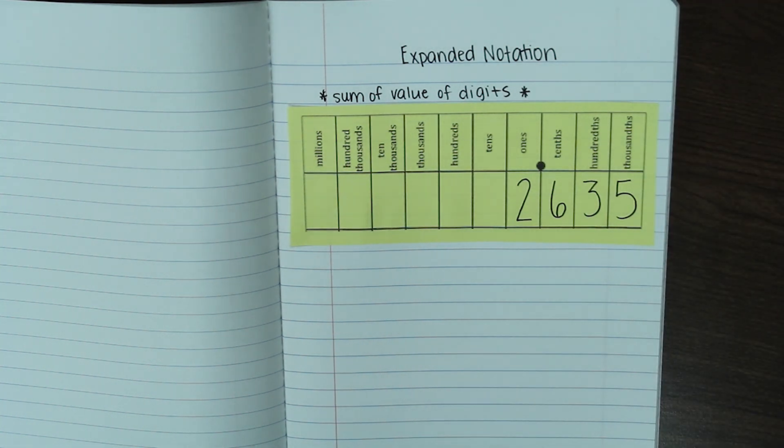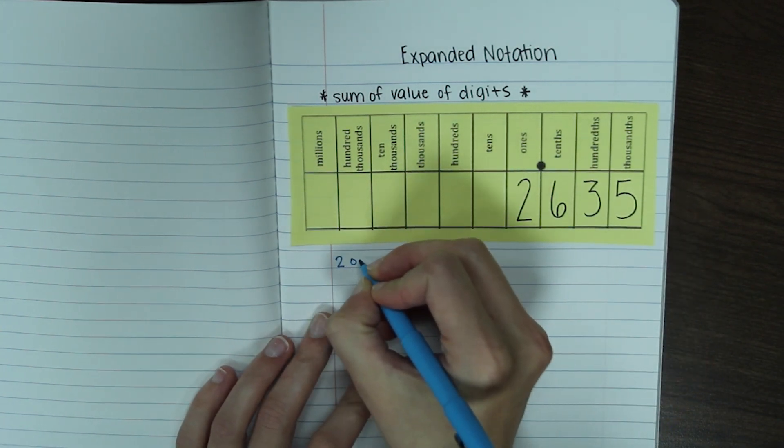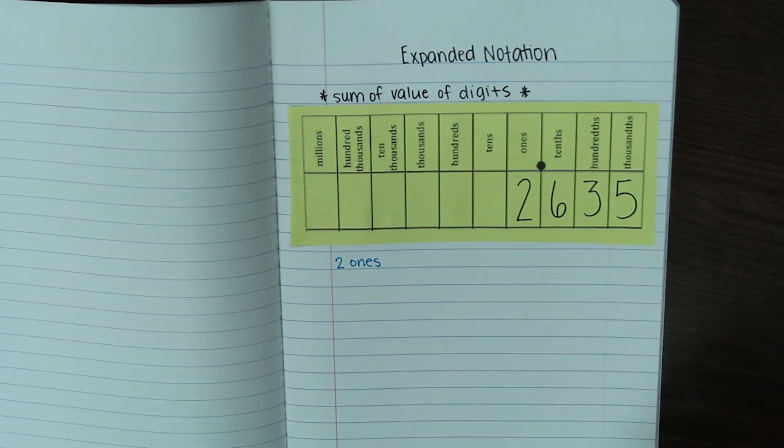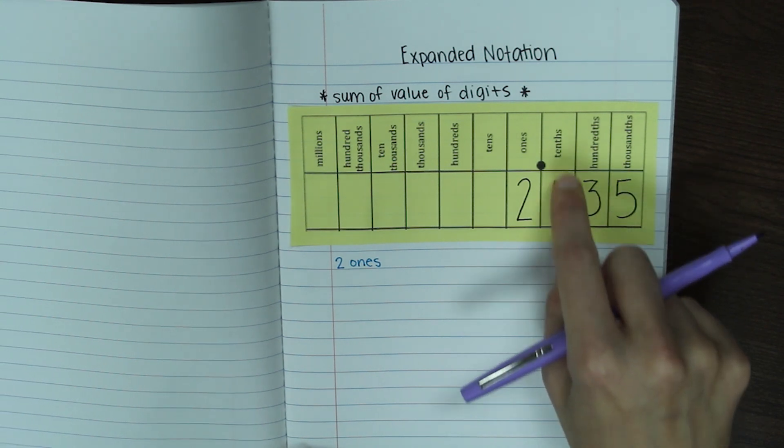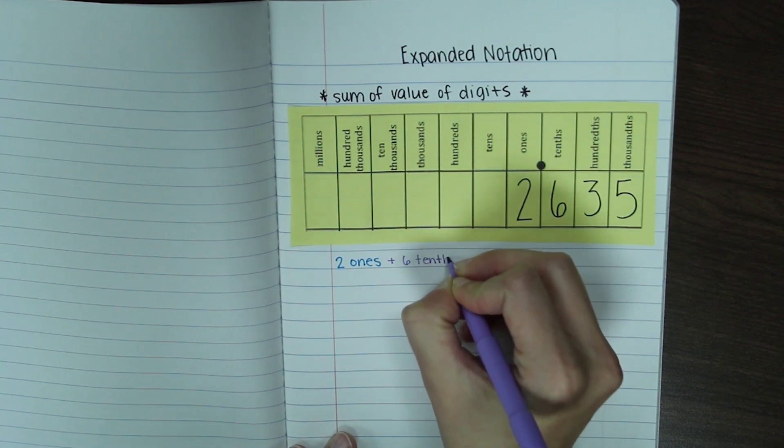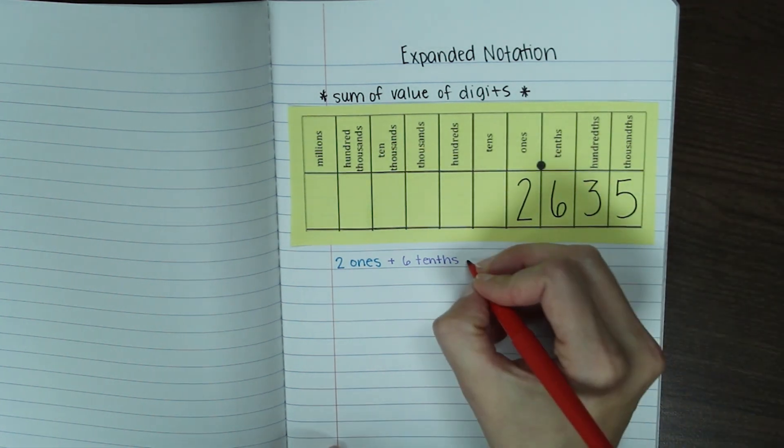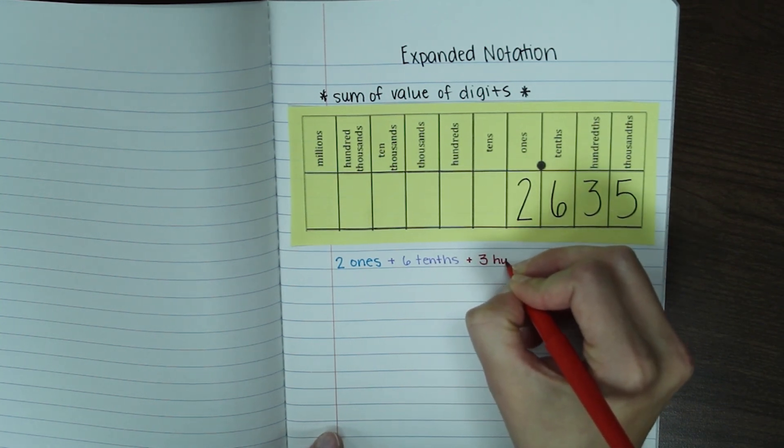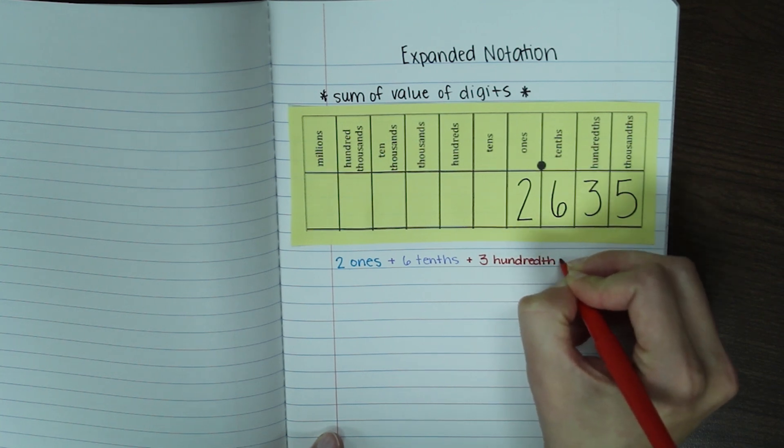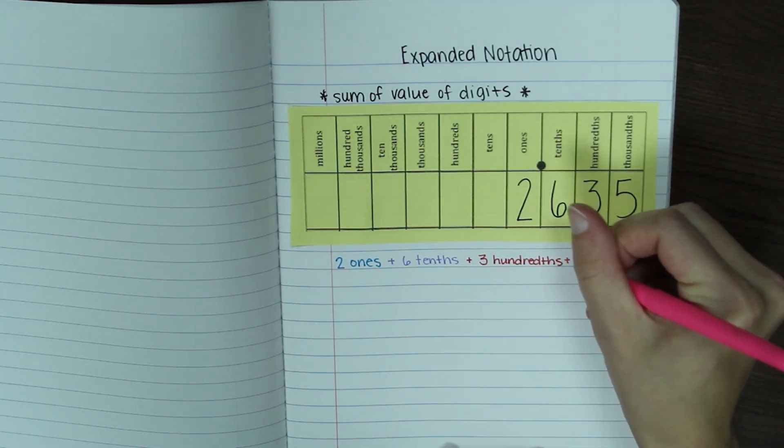So we're going to take, I'm going to use four different colors. If you like to do your notes in colors, you can do that too. If not, just use pencil. First thing we're going to do is we're going to write out in words what each number is worth. So this two is worth two ones. Then our six is in the tenths place, so it is worth six tenths. So I'll write added together with six tenths. Our three is in the hundredths place, so it's worth three hundredths. And our five is in the thousandths place, so we'll add on to the end five thousandths.